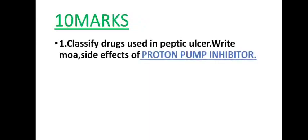First question, 10 marks: Classify drugs used in peptic ulcer and write the mechanism of action and side effects of a proton pump inhibitor. The question is clear — you have to write and classify drugs used to treat ulcers, and for any pharmacology drug, you must maintain the mechanism of action and side effects.